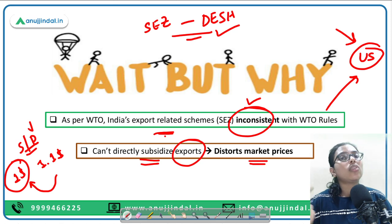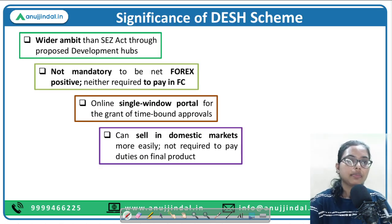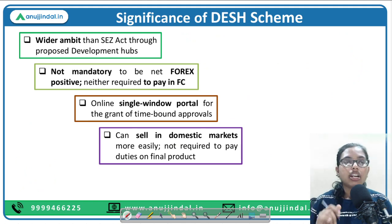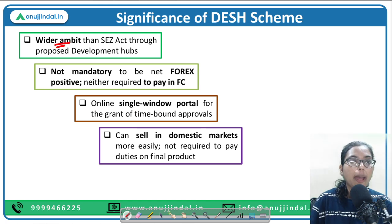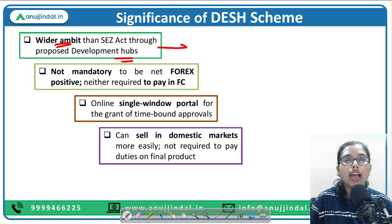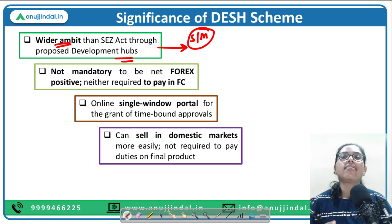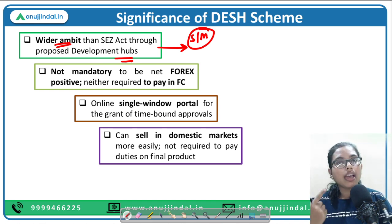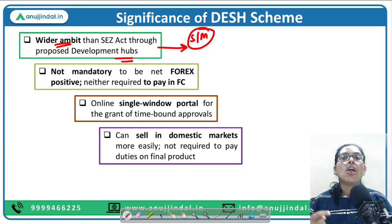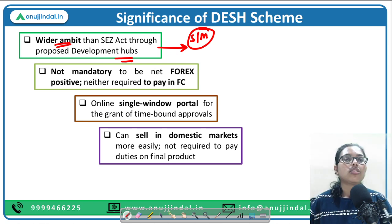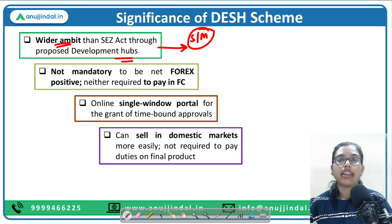The DESH Scheme, once converted into an Act, will have a wider ambit than the SEZ Act. Through development hubs, we will not only cater to the services or manufacturing sector but aim for holistic development of the entire area. All unutilized lands will be utilized, and there will be more employment opportunities created.